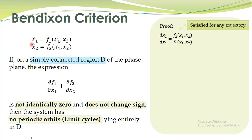We have the state-space model of the system, and any trajectory satisfies this equation. Writing these equations in the form of differentials and rearranging — by multiplying F1 to the left-hand side and bringing the other term to the right-hand side — any trajectory in the phase plane always satisfies this rearranged equation.